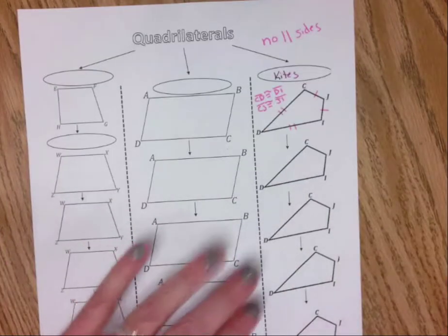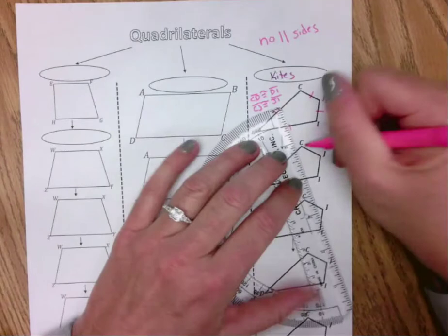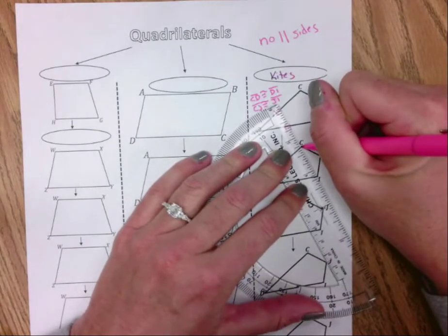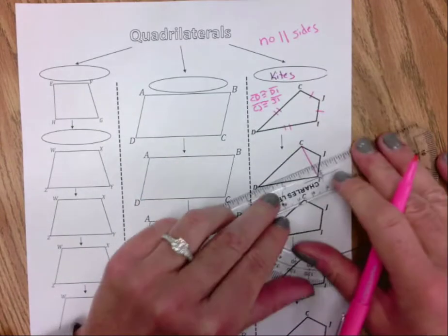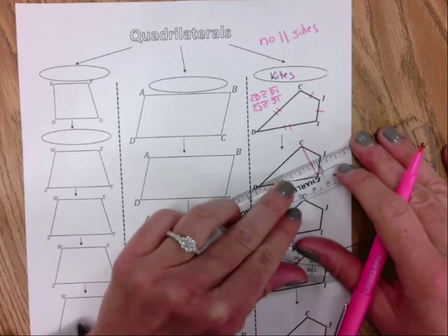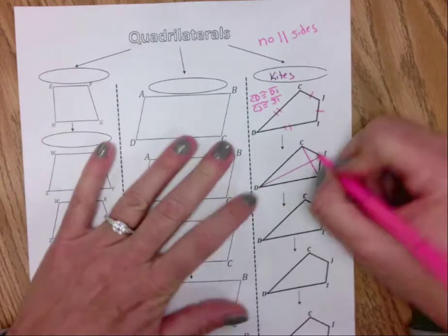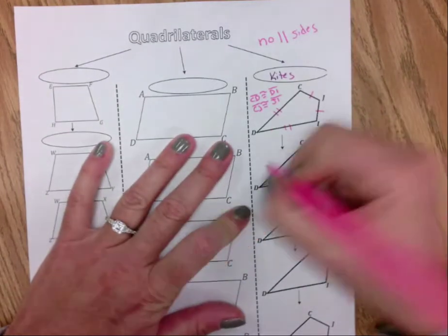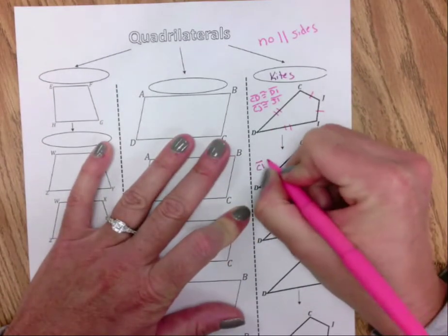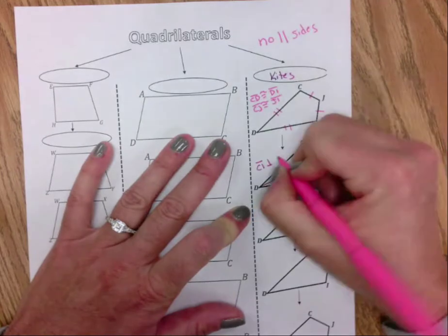It also has diagonals that are perpendicular. So I could say Ci is perpendicular to Jd.